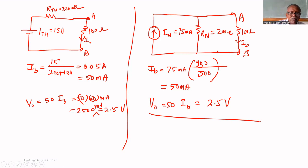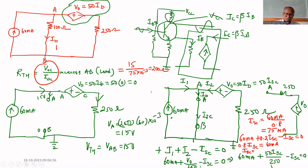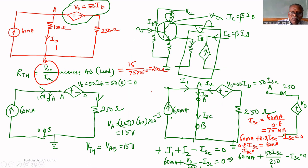The important lesson in this problem: you cannot find R_Thevenin simply by looking across AB when there is a dependent source. In that case, you must find short circuit current and open circuit voltage; their ratio gives R_Thevenin, which equals R_Norton. Both theorems give the same result.